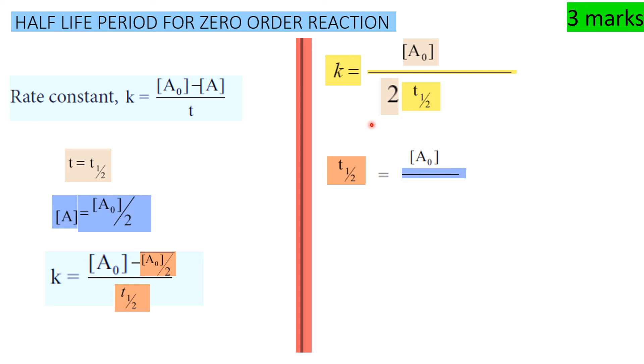Substituting: t½ equals A0 divided by 2k. This is a very important formula.